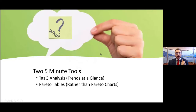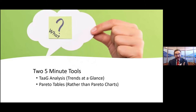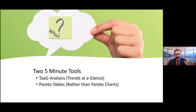What we're going to cover today are two tools in particular. These are tools that take five minutes or less and they're called Trends at a Glance — or TAG analysis — and Pareto tables. This is similar to Pareto charts, but when you have so much data the charts become unwieldy and you might want to use a table. This again takes five minutes or less.